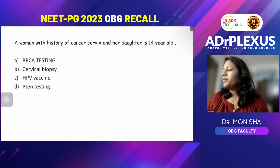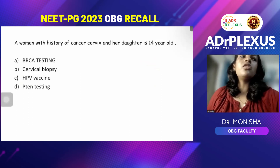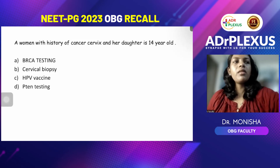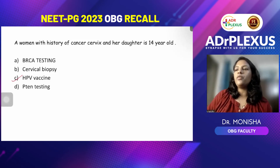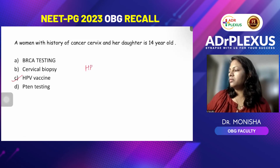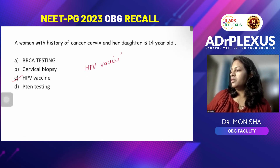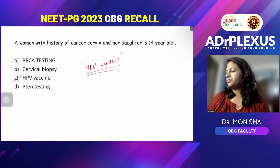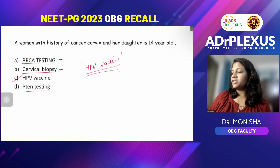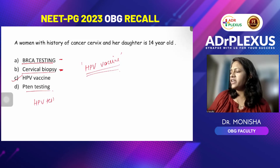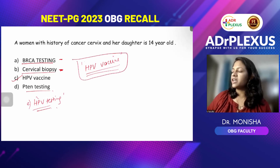A woman with a history of cervical cancer has a 14-year-old daughter. Cervical cancer does not have a genetic component, so the recommendation is HPV vaccination. The answer is HPV vaccine for the daughter.